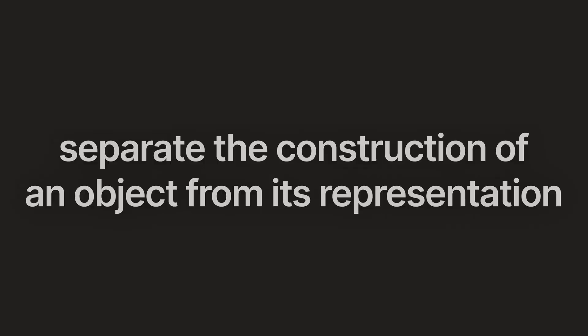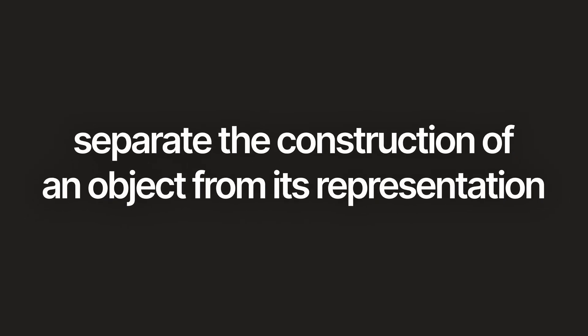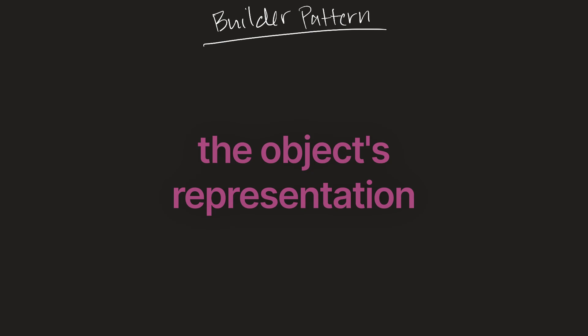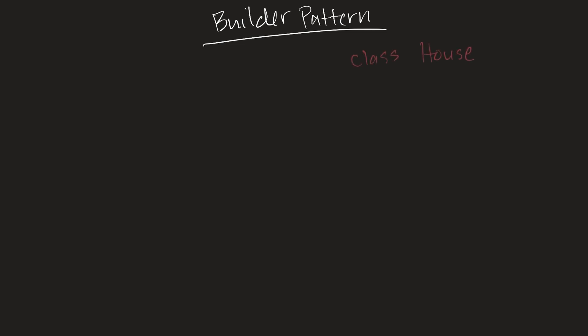The goal of the builder pattern is to separate the construction of an object from its representation. Let's dissect that — the construction of an object and its representation. We need to know what both of these things mean in order to understand this definition. So let's start with an object's representation. If we imagine we have a class called House, and that class has three fields: